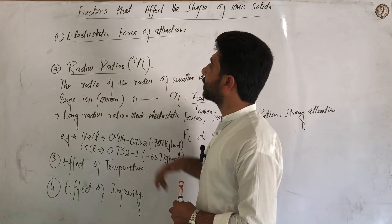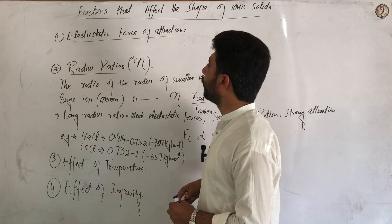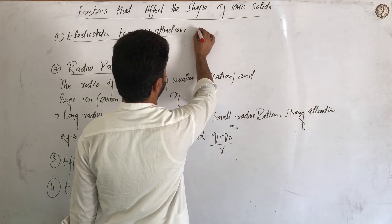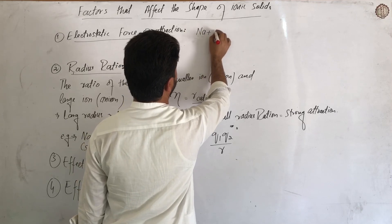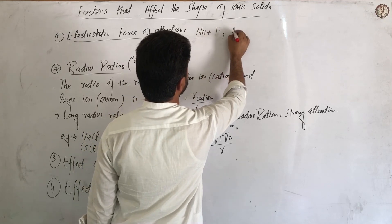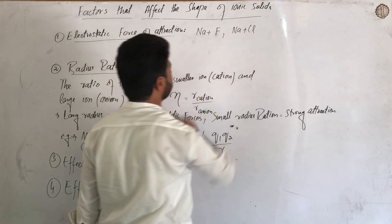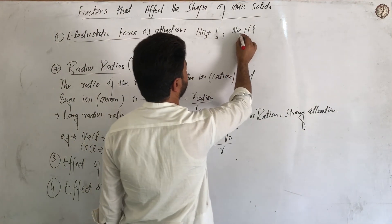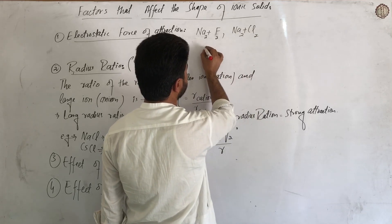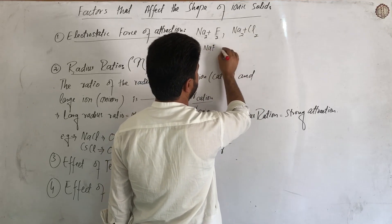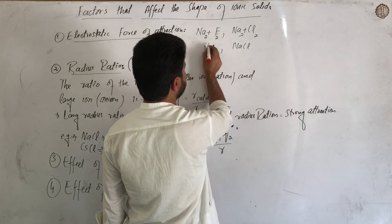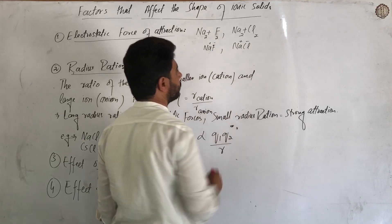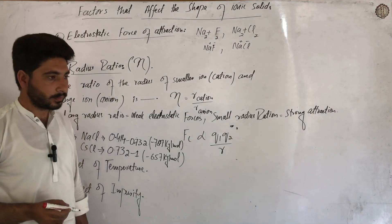The factors are: first, the electrostatic force of attraction. For example, sodium and fluorine, or sodium and chlorine - sodium has a positive charge and chlorine has a negative charge. These oppositely charged ions are the basis of ionic bonding.